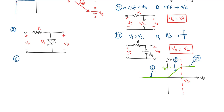We start with the case where the diode is forward biased, which happens when VI is greater than 0. In this case D1 is on and looks like a short circuit, so the output voltage would be 0 volts. Note that we won't be drawing the circuit diagrams here since we have seen enough of them and you can draw them yourself.